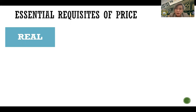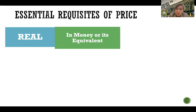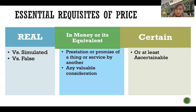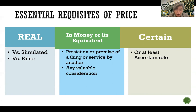Like the contract of sale itself and like the subject matter, there are also requisites for the price to be valid. First, it must be real — as opposed to being a simulated price or a false price. The price must also be in money or its equivalent, as provided for as a requisite in the contract of sale itself. And also the price must be certain. In some instances, if it's not certain yet at perfection of the contract, the legal standard is that the price must at least be ascertainable.